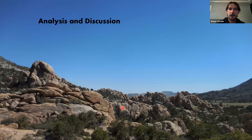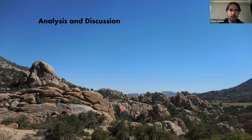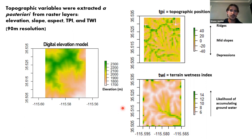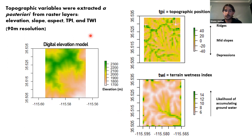Those are the highlights from the field surveys. Moving into analysis — to understand how topographic and climatic factors influence the distribution of these plants, I used GIS modeling with digital elevation models to generate topographic data for all surveyed sites.